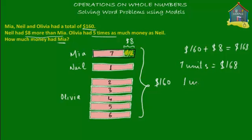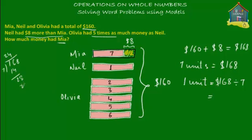So then how much is one unit equal to? Obviously, one unit is equal to $168 divided by seven. Let's calculate: 168 divided by 7 equals $24. So each unit is equal to $24. So Neil's money is equal to $24.